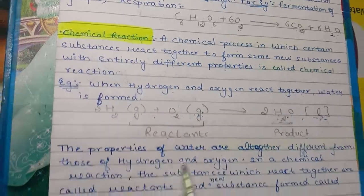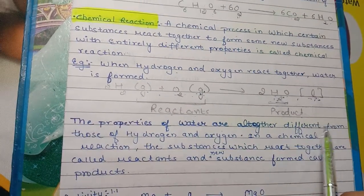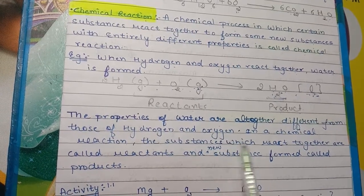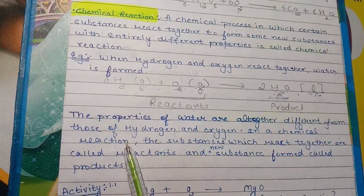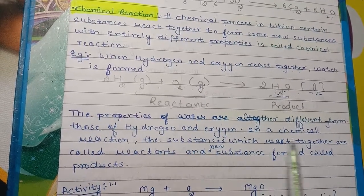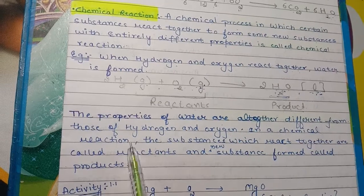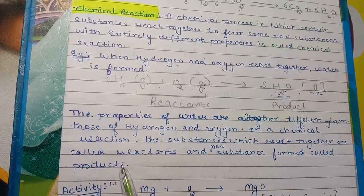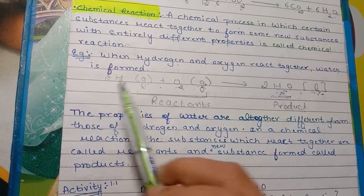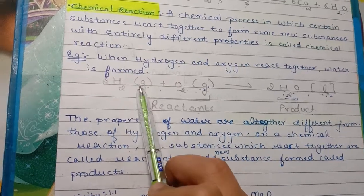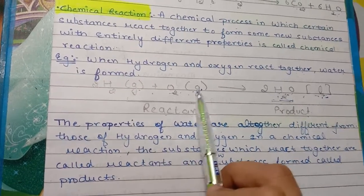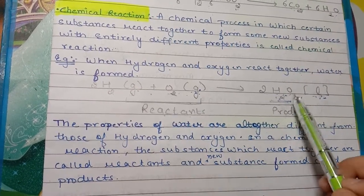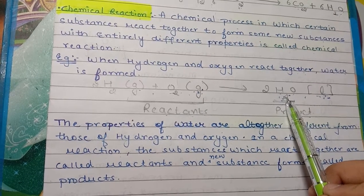So we know that the properties of water are altogether different from those of hydrogen and oxygen. In a chemical reaction, the substances which react together are called reactants, and the new substance formed is called the product.